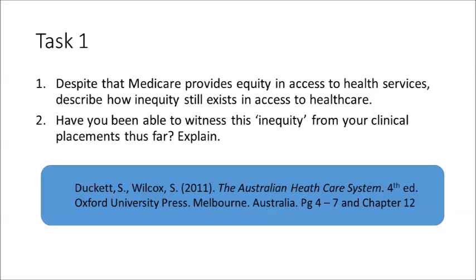Whilst you might be able to answer these two questions off the top of your head, you might still need to do some reading. Your best source for this task is pages 4 to 7 from Duckett and Wilcox, in addition to the section on equity in chapter 12 of the same textbook. As with the tasks in module 1, it helps if you work with your team to compare answers.